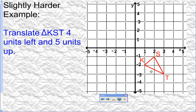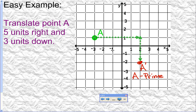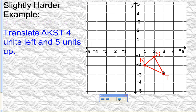Now we have a shape — triangle KST. We want to translate this whole shape four units left and five units up. You might be wondering how to do a whole shape. Here's what to think about: this shape is really just made up of three points — K, S, and T. So just like on the previous example where we translated one point, now we're just going to translate all three of these points.